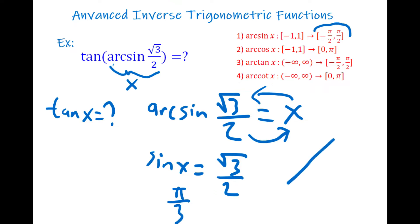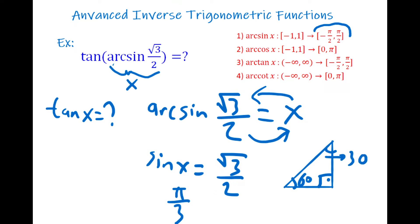I recommend you draw a triangle. Let's say this angle is 60°, this is 90°, and the leftover is 30°. Write down the sides: the side opposite 30° is 1, the side opposite 60° is √3, and the side opposite 90° is 2. We all know this because it is a special right triangle.